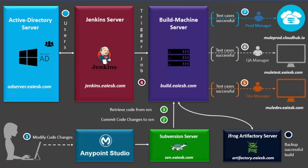It comprises various tools. Anypoint Studio is a development editor to develop Mule project code. Subversion stores the Mule project code. JFrog Artifactory archives the golden copy of each promoting code. Active Directory maintains all the users and groups information who have access to promote the code. Jenkins promotes the code from environment to environment.